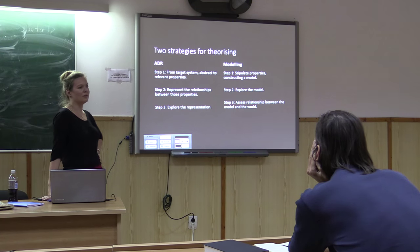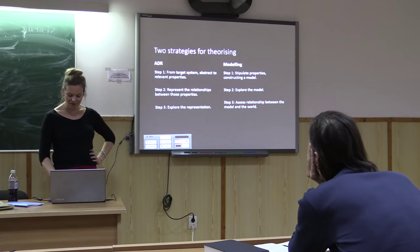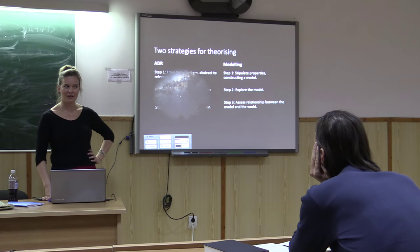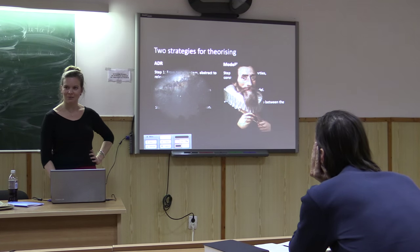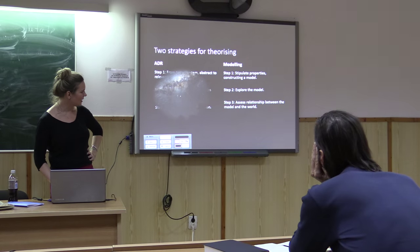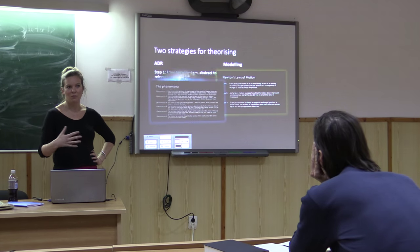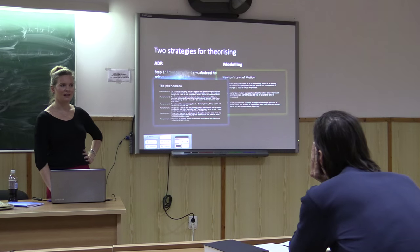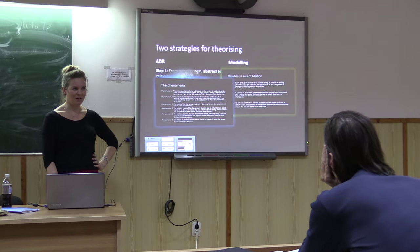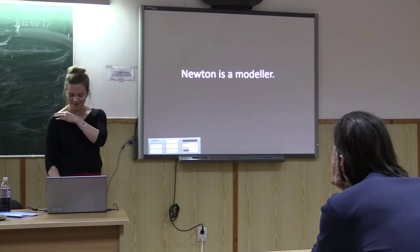So what would it mean for Newton to be an abstract direct representationalist? Well, it would probably start with planetary observations — in fact this is more like what Kepler did. But as I've already shown you, Newton doesn't do that. Newton stipulates some conditions — his laws of motion — and it's only in book three that we even see the phenomena, our target system, in any detail. I think my case will become stronger in the next section, but just for now: Newton's a modeler in the Principia.